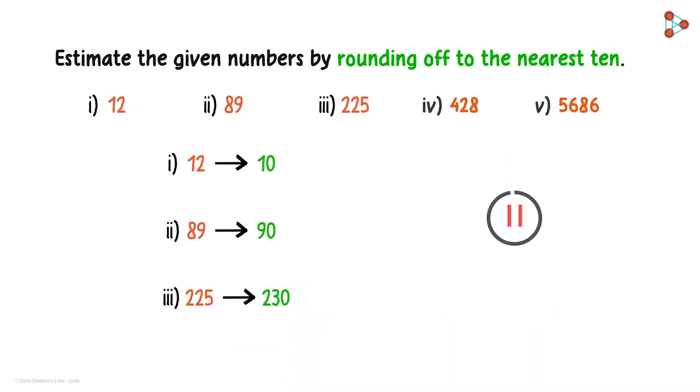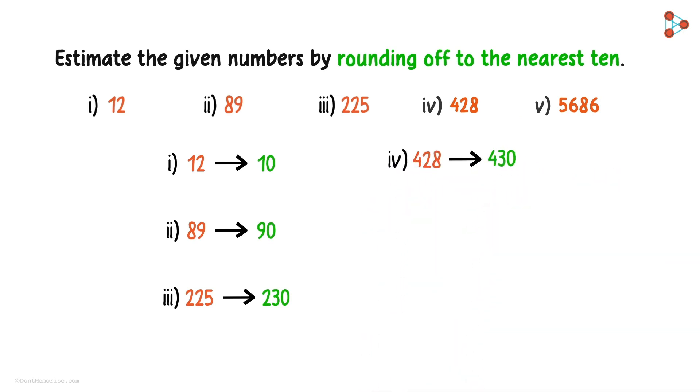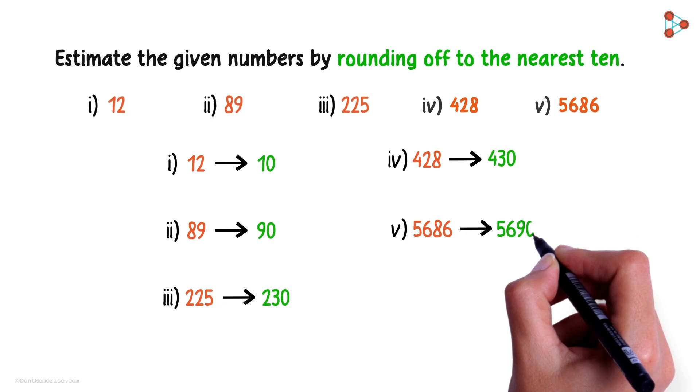Let's consider a few bigger numbers now. Estimation of 428 is 430. And that of 5686 is 5690.